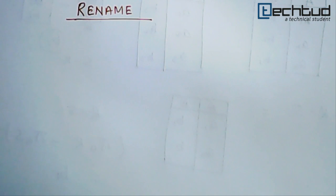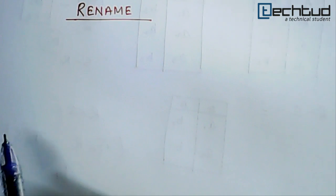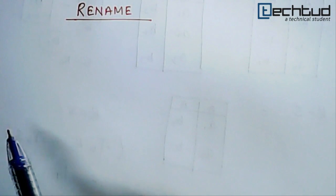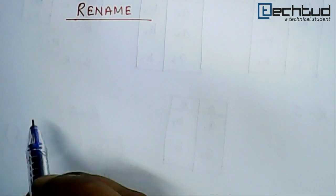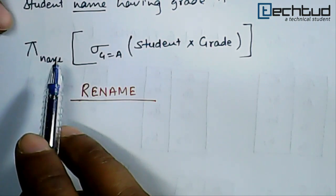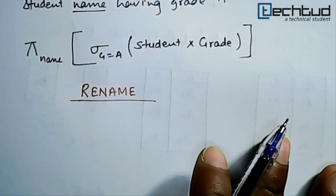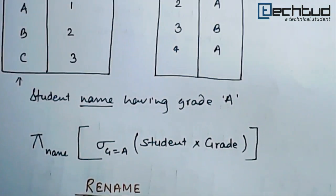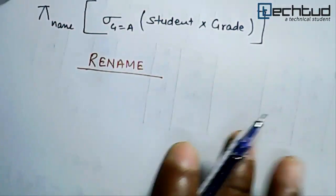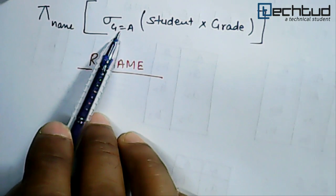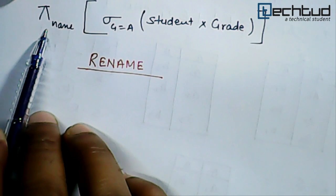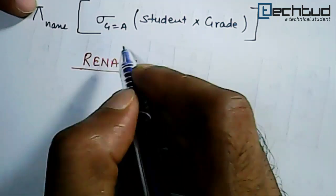Hello everyone, welcome back. Here we have a simple operation: rename. Rename is basically, as the name suggests, we give a name to a relation. In our previous example, we found the cross product of two relations, filtered based on a condition, and then projected the name only.